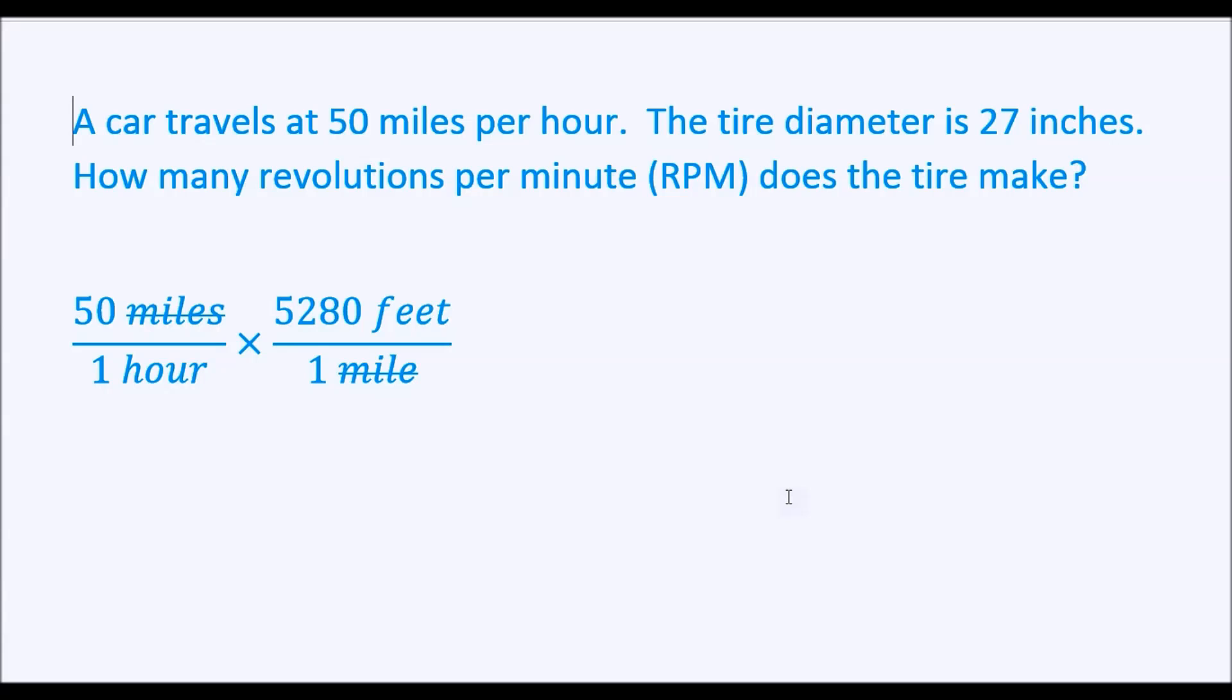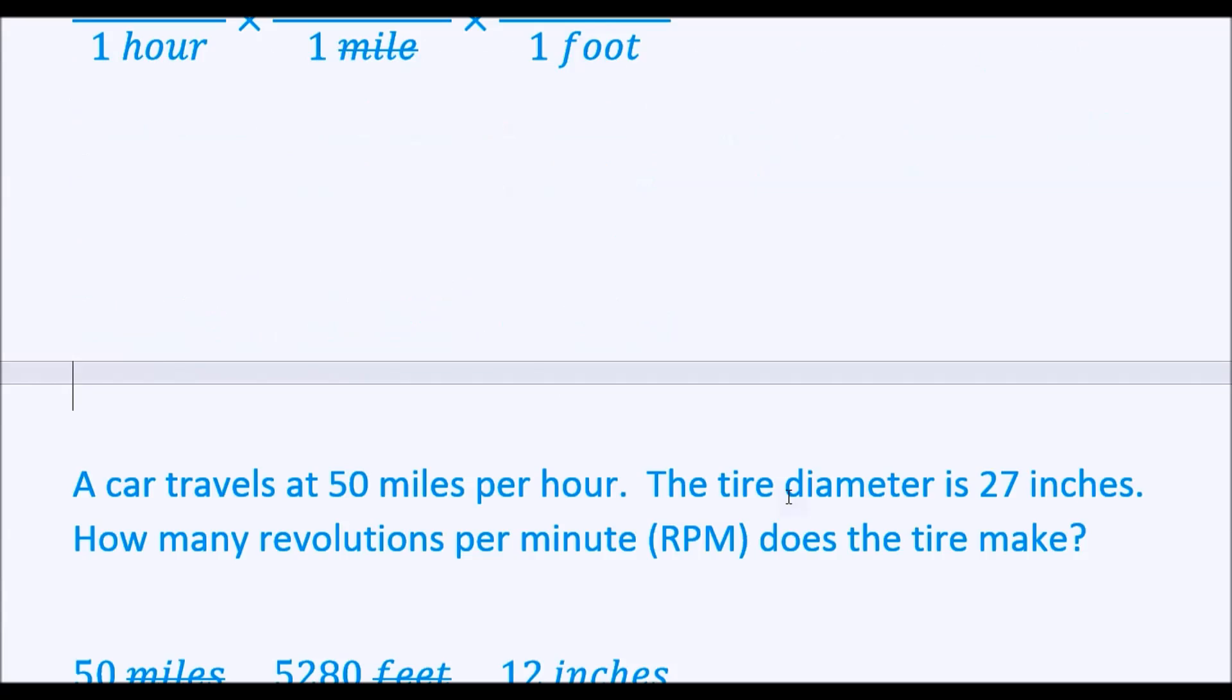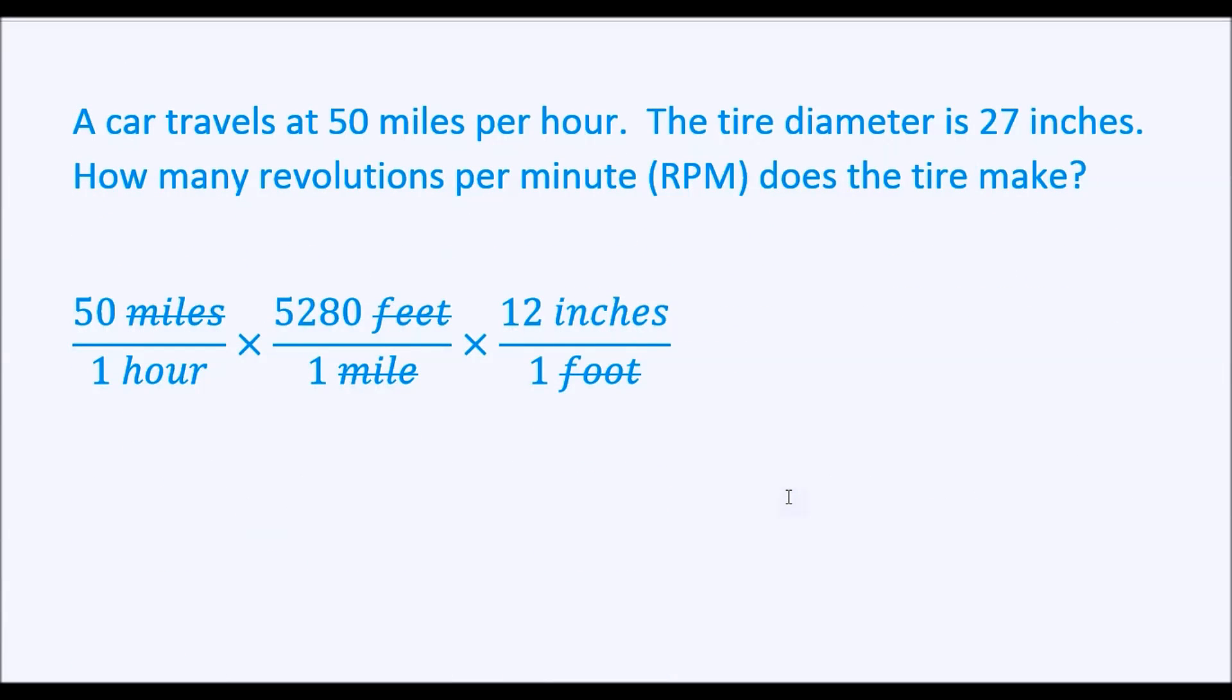Now we have feet per hour. Now we're going to go to inches. We know there's 12 inches in a foot. And we want to get rid of the foot, so we put the inches on the top, 12, and the feet on the bottom. And now we can cancel out the feet. And now we've got inches per hour.